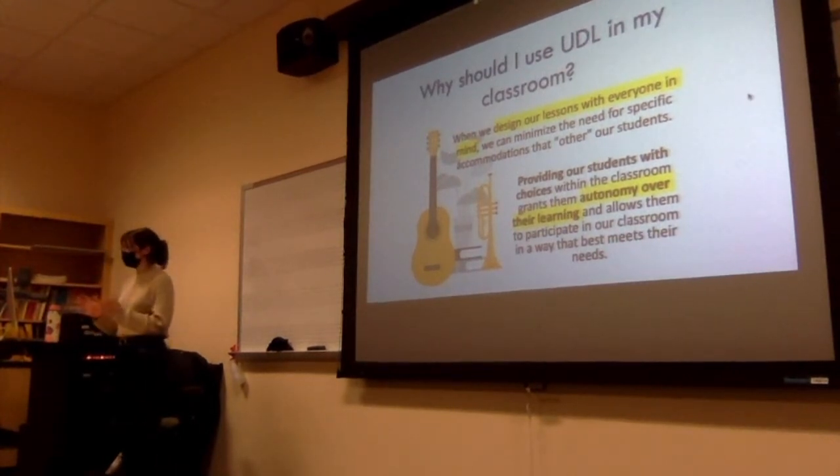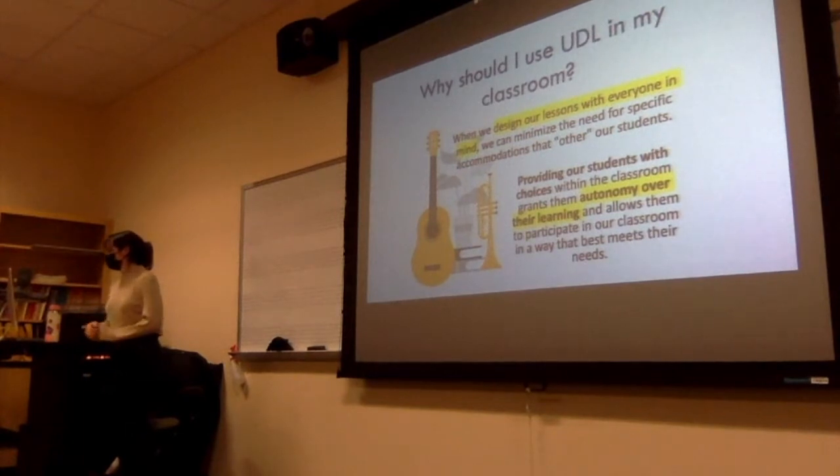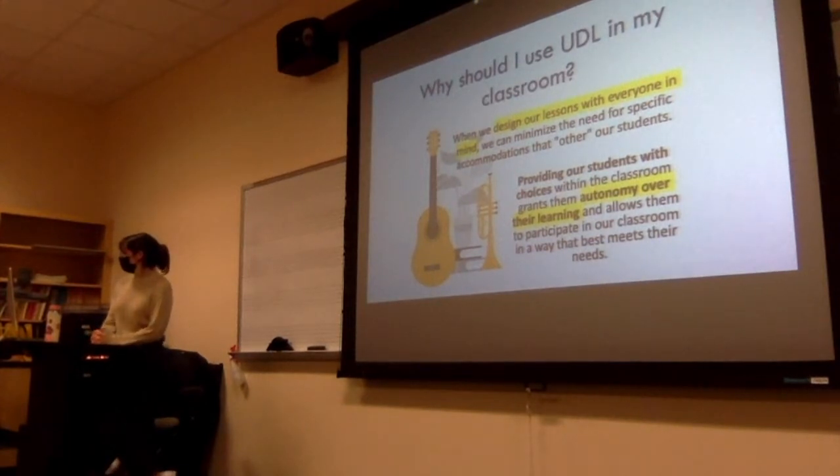So that was UDL, Universal Design for Learning. When we design our lessons with everyone in mind, again there's no average learner, we can minimize the need for accommodations that other students. A big takeaway is providing our students with choices and different ways to engage with our classroom and our lesson materials. Grant some autonomy over their learning, which I think is a really empowering thing. Everyone should be able to enter a room and engage with it in a way that best meets their needs, so that everyone can walk away with the same takeaways and same value of the experience.